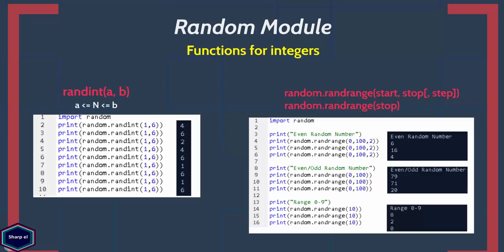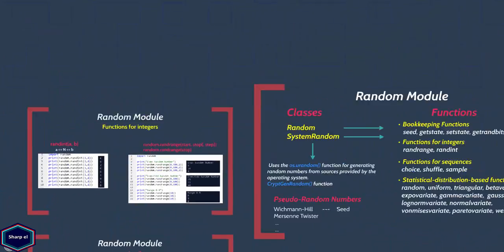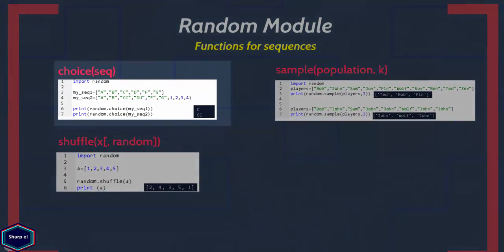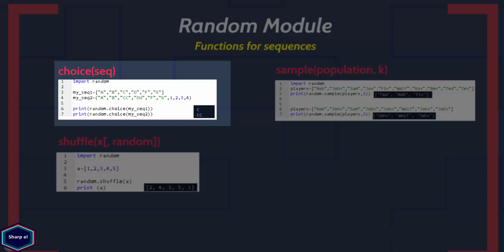Now let's look at the functions for sequences. The choice() function returns a random element from the sequence. If the sequence is empty, it raises an IndexError exception.